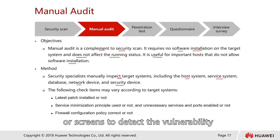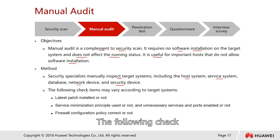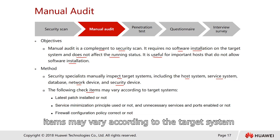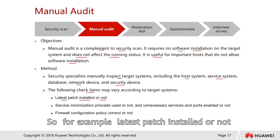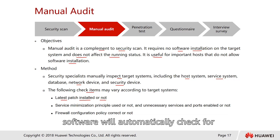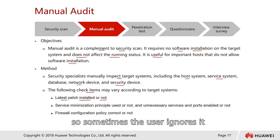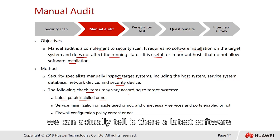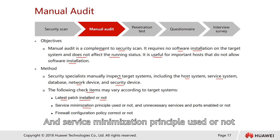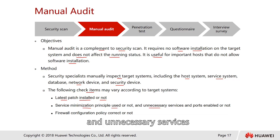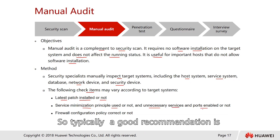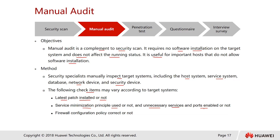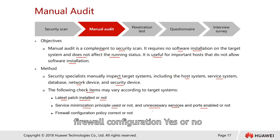The following items can be checked and may vary according to the target system. For example: whether the latest patches are installed — sometimes users ignore automatic update prompts — and whether the service minimization principle is used, meaning unnecessary services and ports should be turned off. Also checking whether the firewall configuration policy is correctly and completely configured.